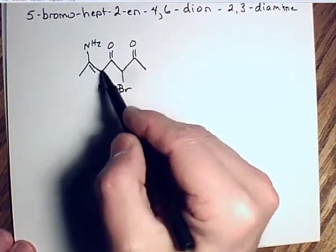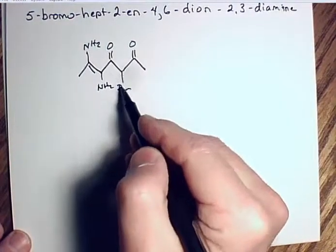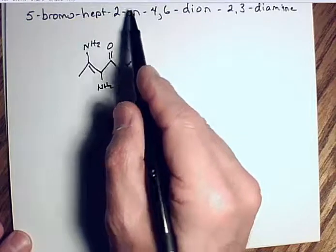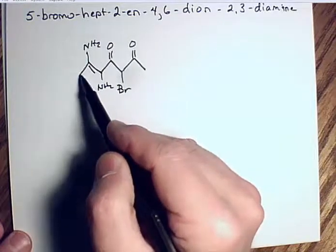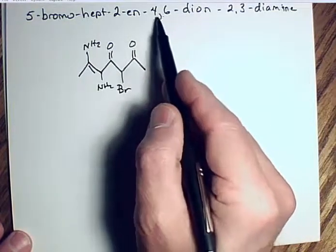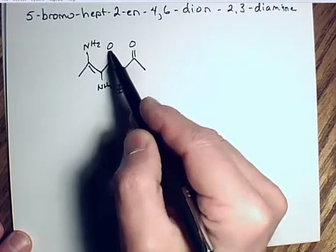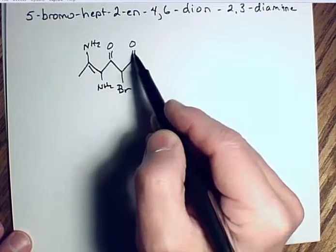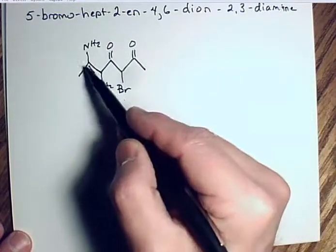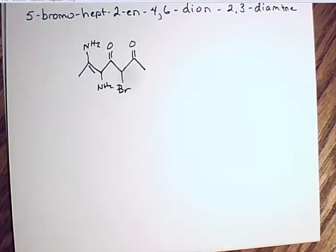Working from name to structure: 'hept' gives seven carbons. Bromo on carbon five. Double bond on carbon two. Ketones on four and six ('4,6-dione'). Two amines on carbons two and three ('2,3-diamine').